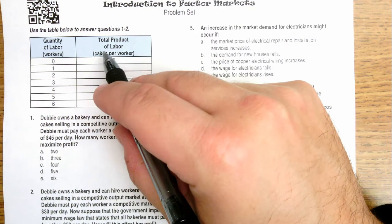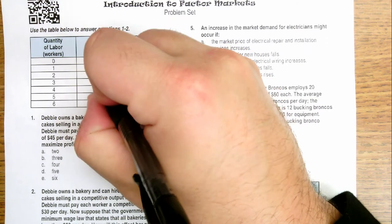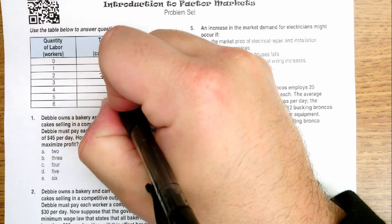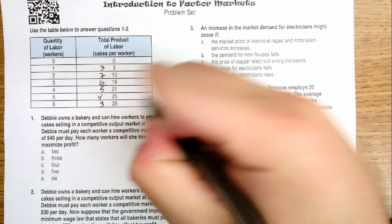So the marginal product here of the first worker is 3 because we go from 0 to 3, for the second worker it's 7, for the third worker it's 6, for the fourth worker it's 5, for the fifth worker 4, and the sixth worker is 3.